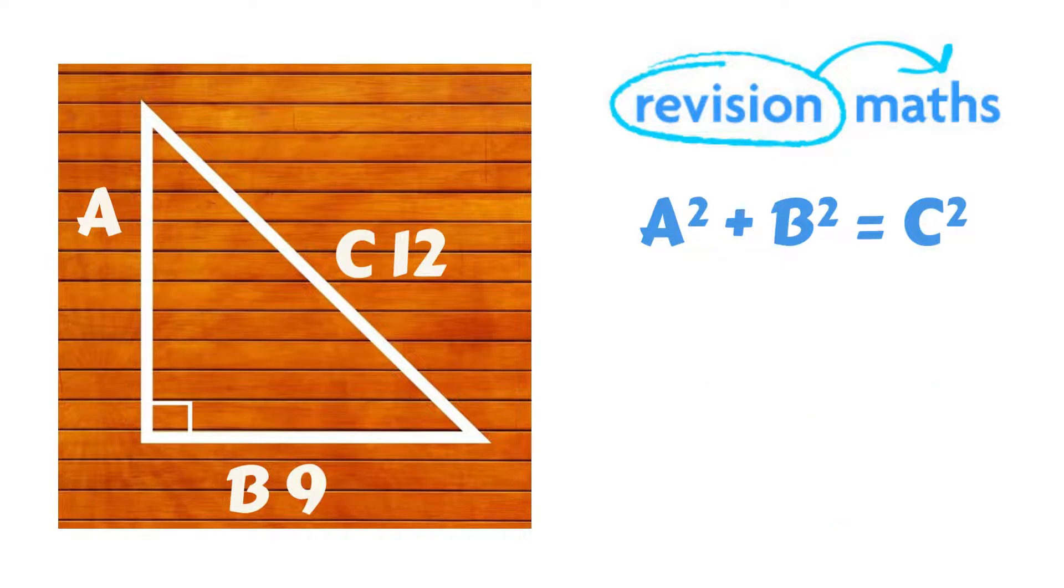Now let's try a different example where you'll need to rearrange the formula as we are not looking for the length of the hypotenuse side C but instead looking for side A in this case.